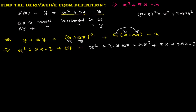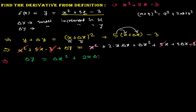Now we look for common terms that cancel on both sides. x² cancels with x², 5x cancels with 5x, and −3 cancels with −3. After cancellation, we are left with: Δy = (Δx)² + 2x·Δx + 5Δx.